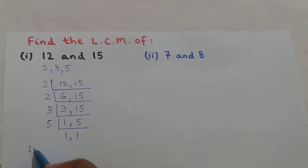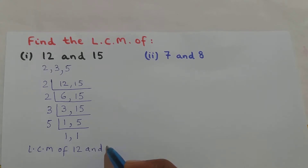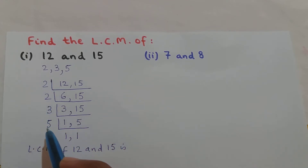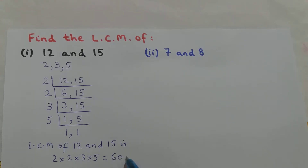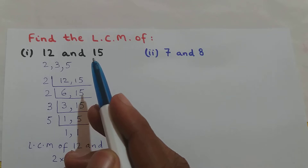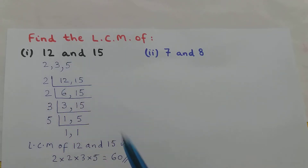The LCM of 12 and 15 is found by multiplying the numbers: 2 × 2 × 3 × 5. That gives 4 × 3 = 12, and 12 × 5 = 60. So the LCM of 12 and 15 is 60.